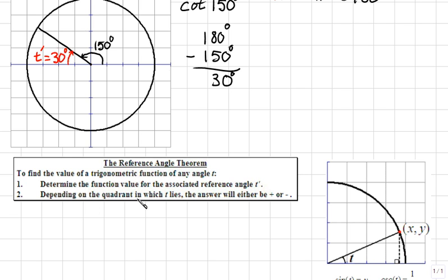the answer will be either positive or negative. So, this means that for us to find cotangent of 150 degrees, this will provide, through the reference angle theorem, the exact same value as cotangent of our reference angle, cotangent of 30 degrees. Except,